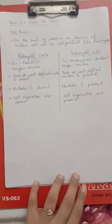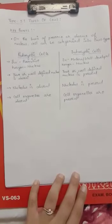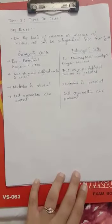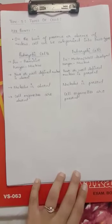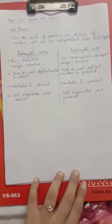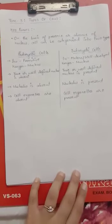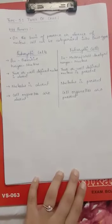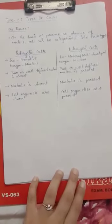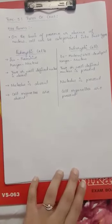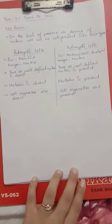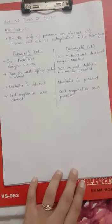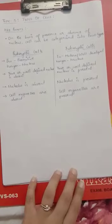Our next topic is types of cells. On the basis of whether a proper or well-defined nucleus is present in a cell or not, the cells can be categorized into two categories: the first one is prokaryotic cells and the second one is eukaryotic cells.